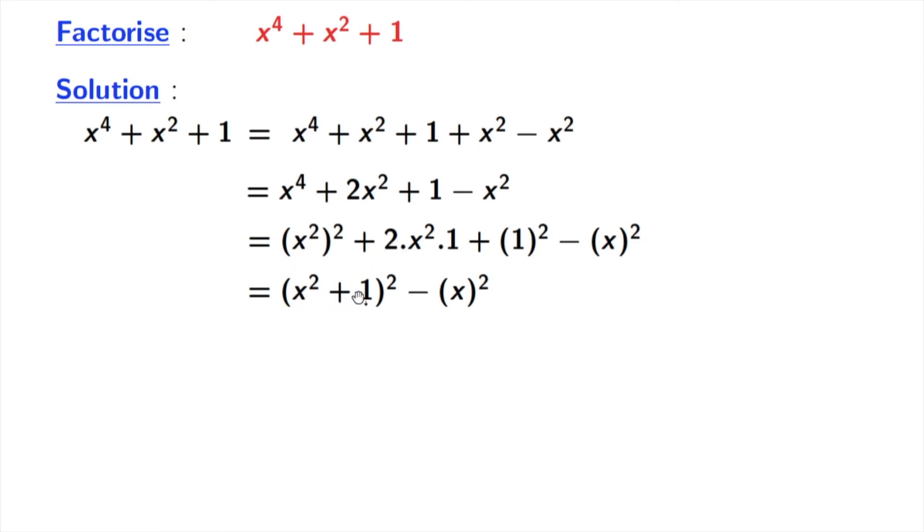So we get (a + b)^2. That is (x^2 + 1)^2. And minus x^2 remains same.